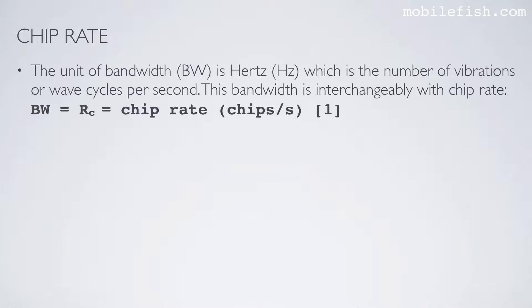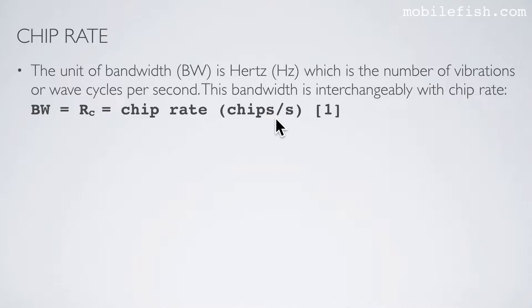Let's first start with the chip rate. The unit of bandwidth is Hertz, which is the number of vibrations or wave cycles per second. This bandwidth is interchangeable with chip rate, so the bandwidth is the same as the chip rate, and the chip rate is expressed in chips per second.